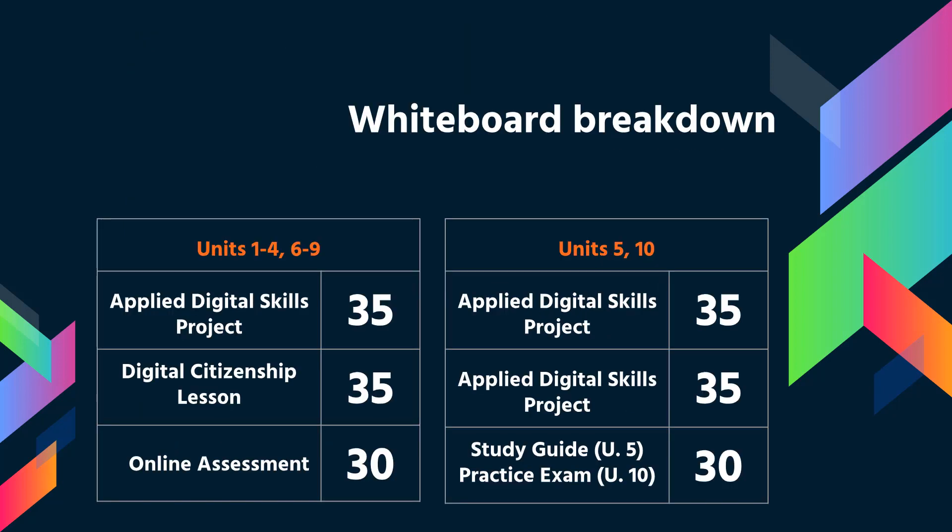The whiteboard breakdown for each unit is as follows. For the first four units of each semester, students will need to complete two projects per unit, each worth 35 points, and an additional online assessment worth 30 points.